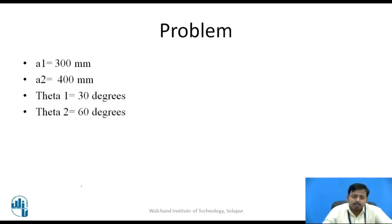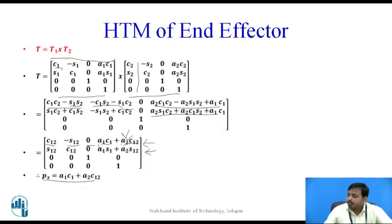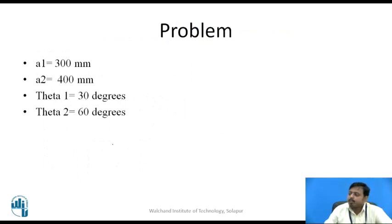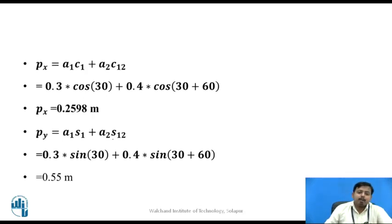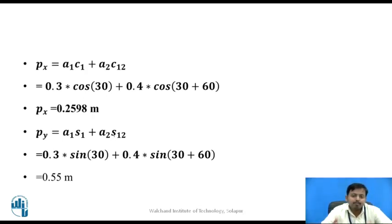We solve a simple problem: a1 = 300 mm, a2 = 400 mm, theta 1 = 30 degrees, theta 2 = 60 degrees. Putting values into the formula, px = a1·cos30° + a2·cos(30°+60°) = 0.3·cos30° + 0.4·cos90°, giving px = 0.2598 meters. Similarly, py = 0.55 meters. This is the position of the end effector that can be computed using forward kinematics.